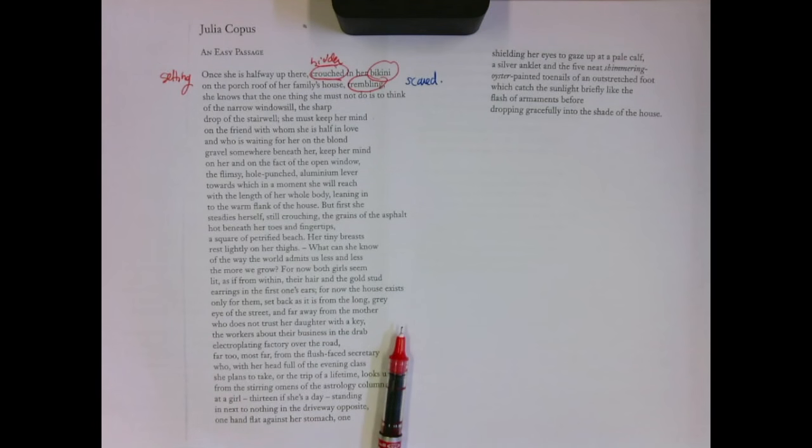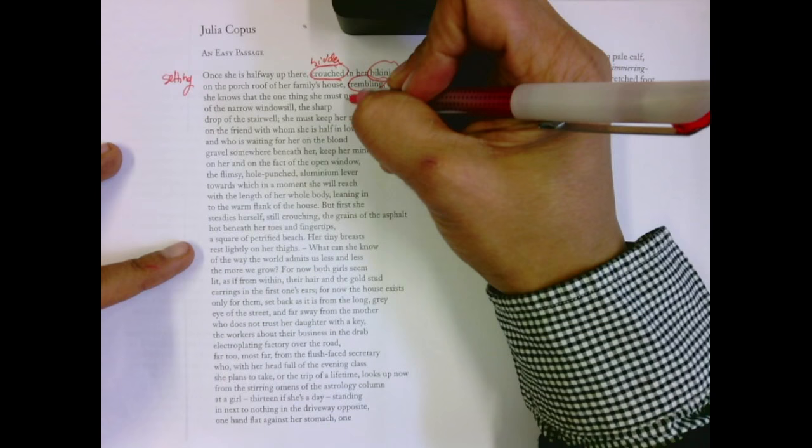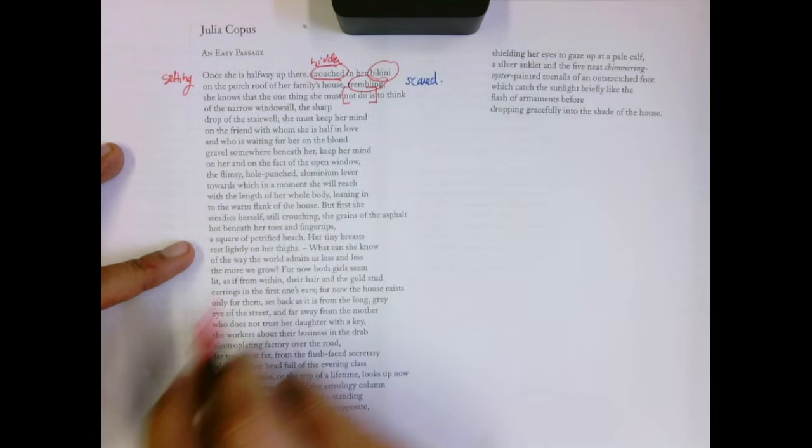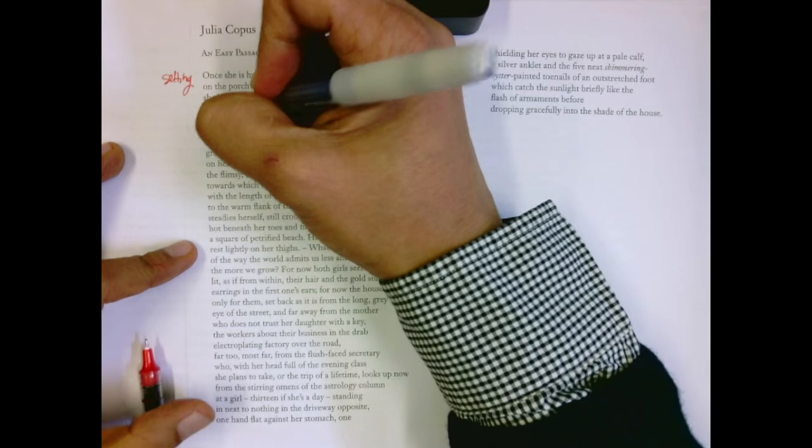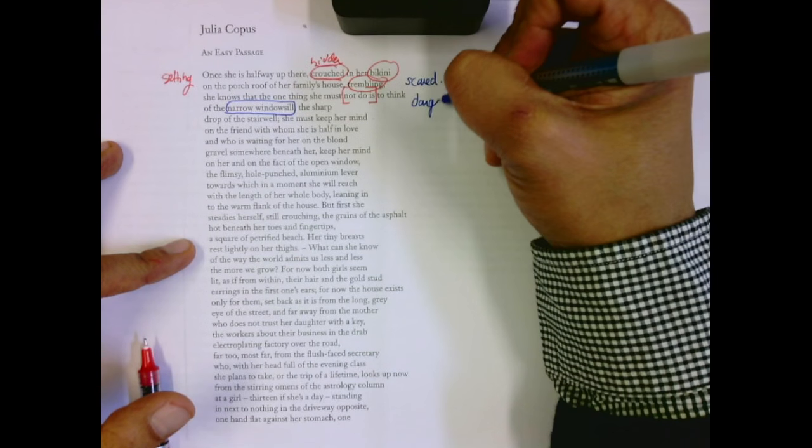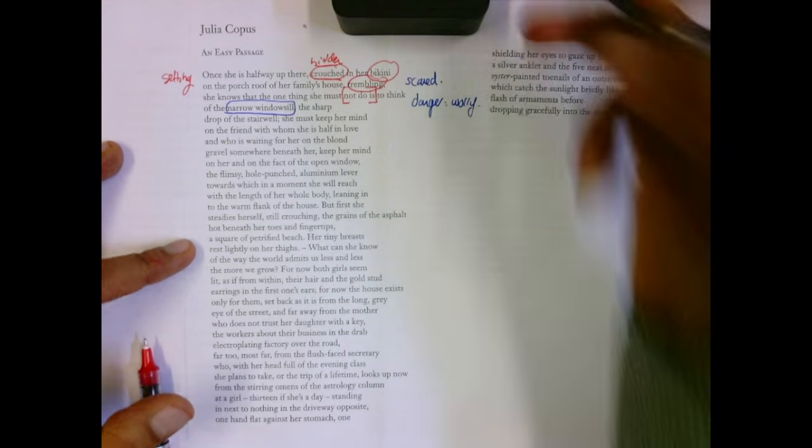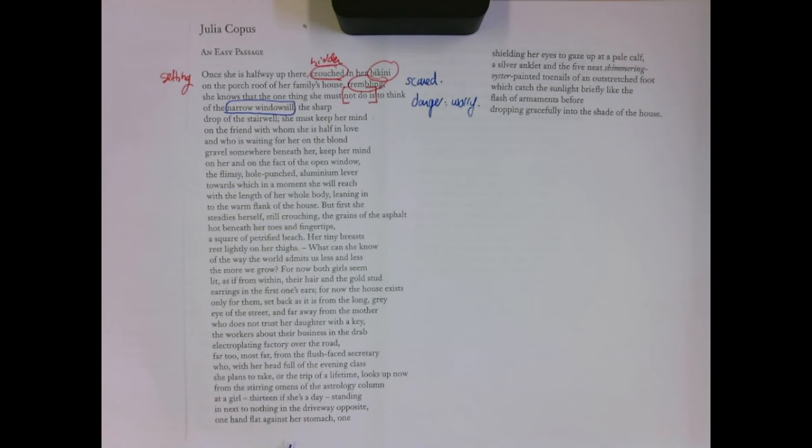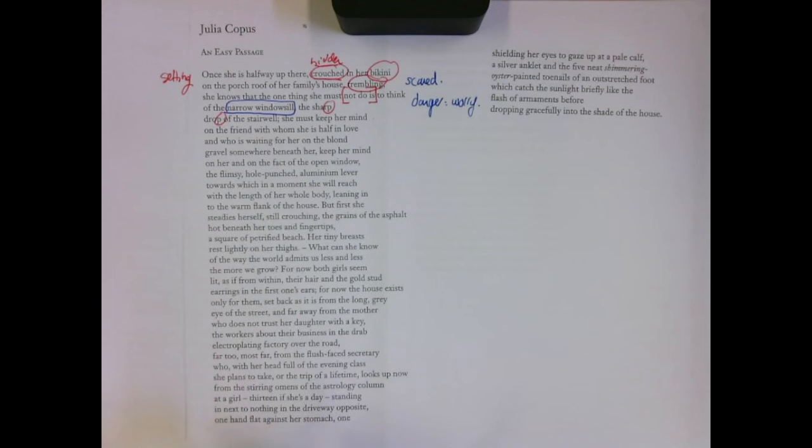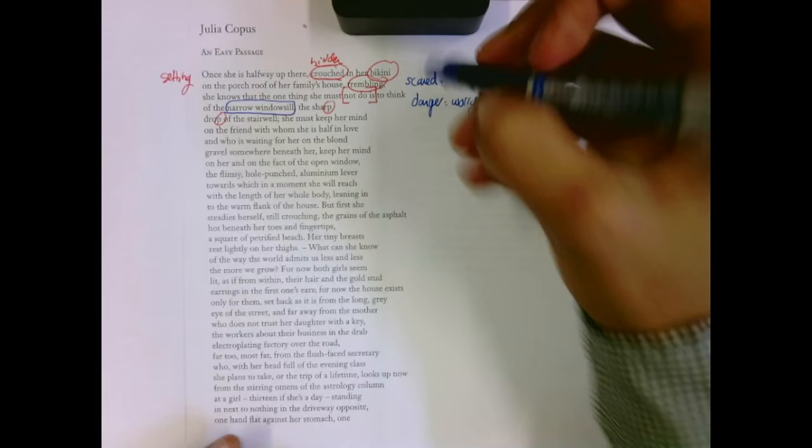She's trying to hide something. She knows that the one thing she must not do is to think of the narrow windowsill. And that's impossible. If you think about the negative, the thing you must not do, well for sure you're going to start doing that. So it focuses you on the danger, the worry. She's trembling. The sharp drop of the stairwell. So there is true danger here.